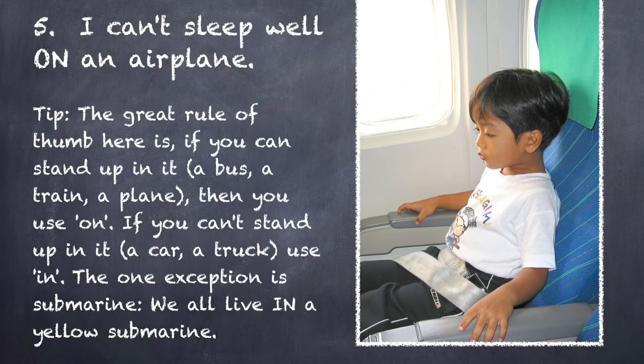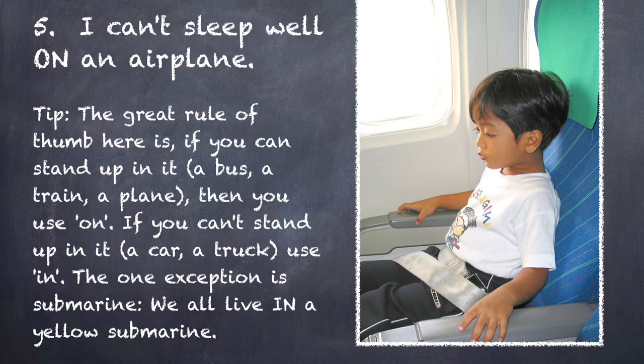Sentence number five: I can't sleep well on an airplane. There's a great rule of thumb: if you can stand up in it — for example, a bus, a train, a plane — then you use 'on': I was on the bus, I was on the train, I was on the plane. If you cannot stand up in it — for example, a car or truck — then you use 'in': in a car, in a truck. The one exception is submarine, and as you know from the Beatles song, we all live in a yellow submarine.